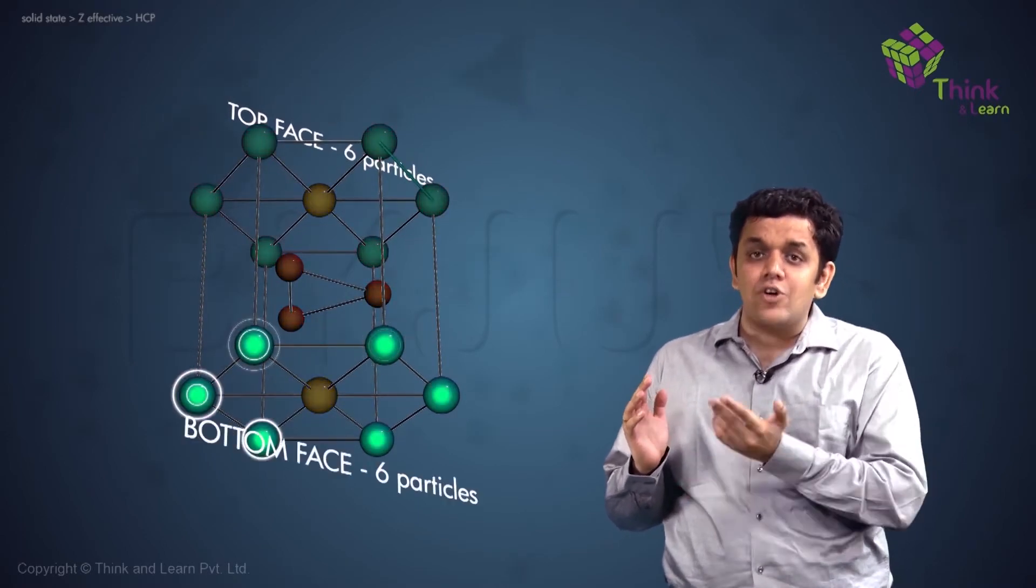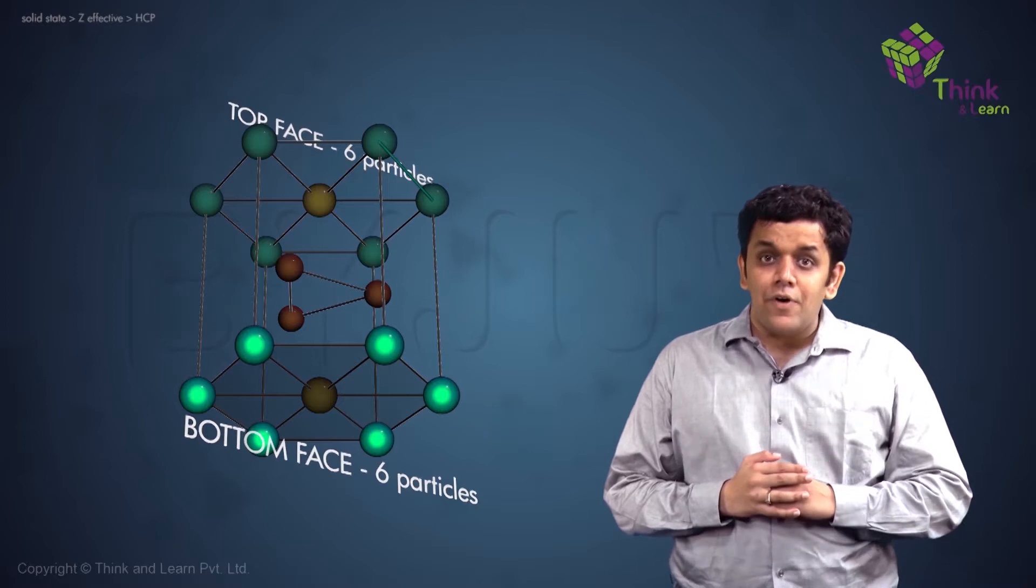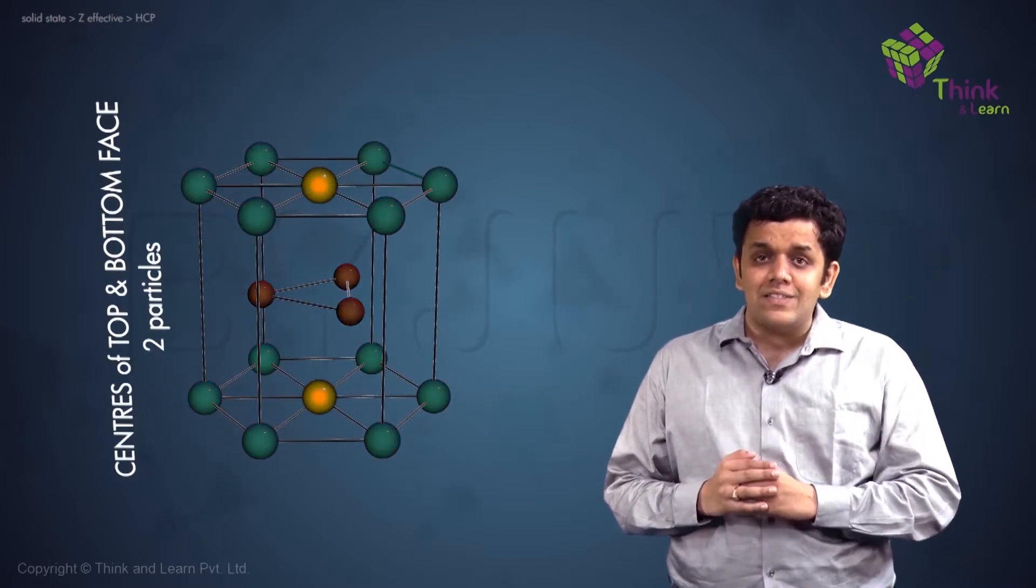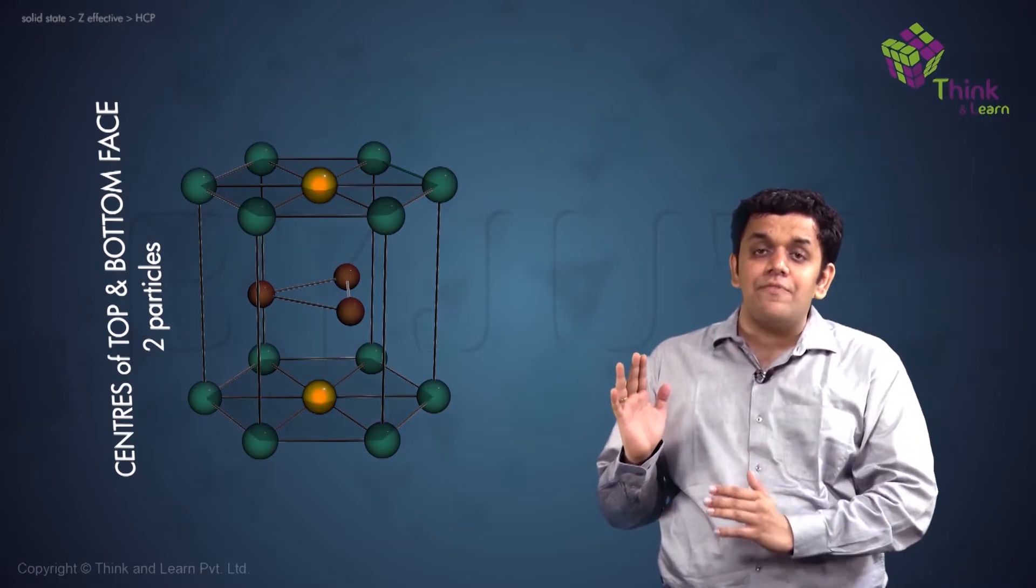Similarly, there are six particles on the corners of the bottom face of the hexagon. Further, there are two particles occupying the centers of the top face and the bottom face of the hexagon.